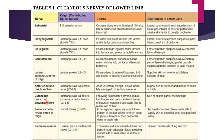This chart shows the names and origins of the cutaneous nerves. The subcostal nerve comes from T12. The iliohypogastric, ilioinguinal, and genitofemoral nerves come from the lumbar plexus, with the genitofemoral from L1 and L2. Then there is the lateral cutaneous nerve of the thigh, the anterior cutaneous branch of the femoral nerve, the cutaneous branch of the obturator nerve, the posterior cutaneous nerve of the thigh, and the saphenous nerve from the femoral nerve with root values L3 and L4.